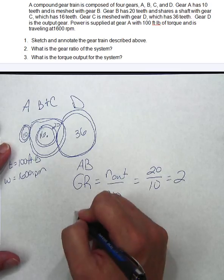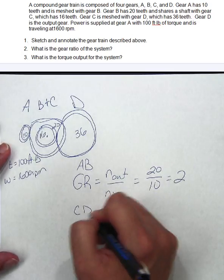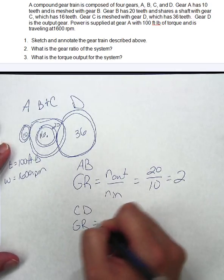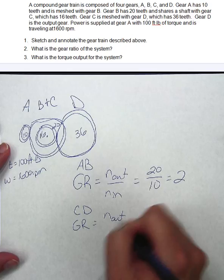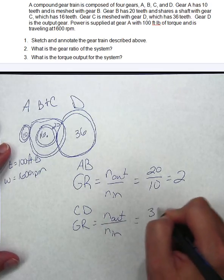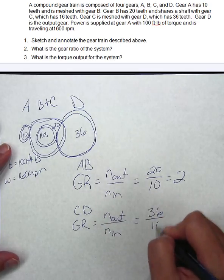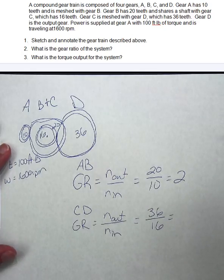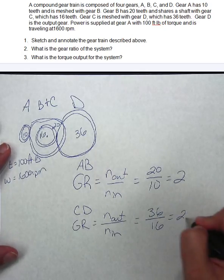So that's 2. For C to D, that gear ratio again, N out over N in equals 36 over 16. Alright, so 36 divided by 16 is 2.25.